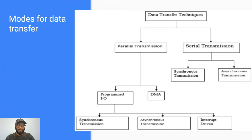Broadly, parallel mode can be divided into two types. Programmed IO, where data is transferred using a program — meaning for each byte of data, a few instructions are required, making it slow in nature. There is another alternative known as direct memory access (DMA). The programmed mode of data transfer has again several alternatives: synchronous, asynchronous, and interrupt-driven. Let us consider each of these modes one after the other.